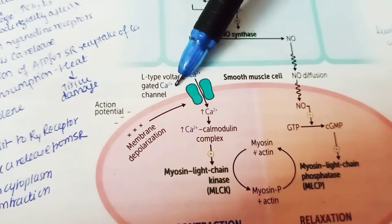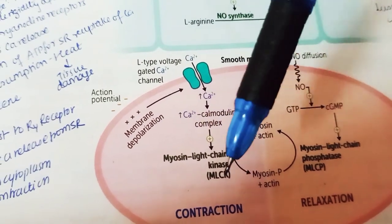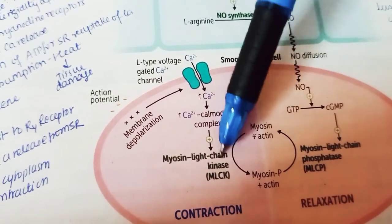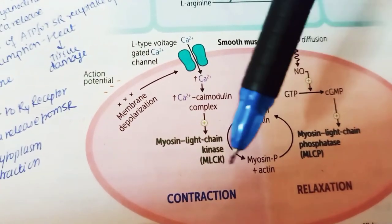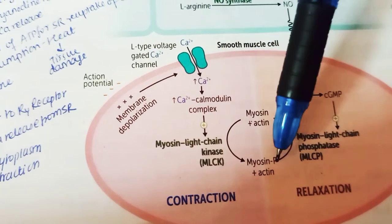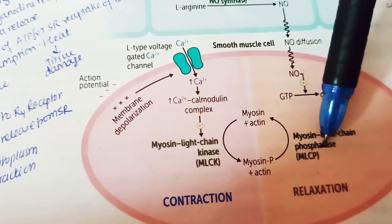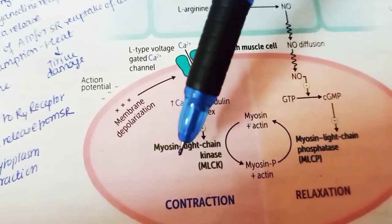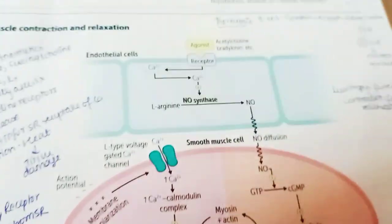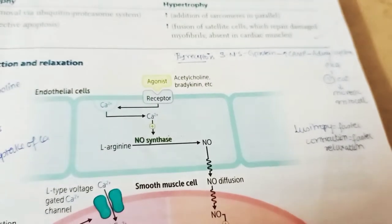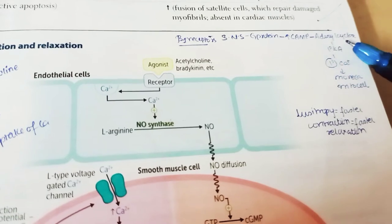On the contraction side, L-type voltage-gated calcium channels open, activating the calmodulin complex, which activates myosin light chain kinase. This phosphorylates myosin, leading to contraction. So: myosin light chain kinase = contraction (phosphorylation); myosin light chain phosphatase = relaxation (dephosphorylation).